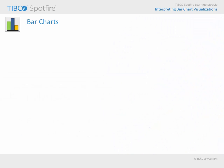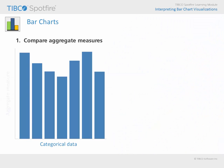Most commonly, bar charts are configured to represent aggregate measures of a group of values, such as a sum, average, or median. This type of bar chart would be useful for making comparisons or examining patterns or trends.